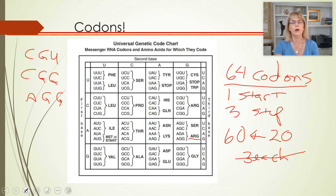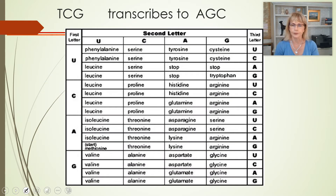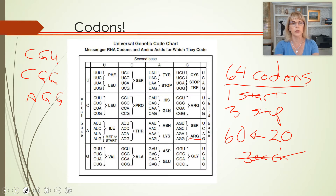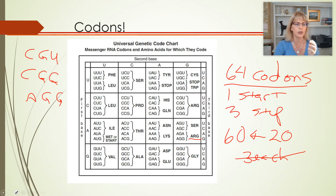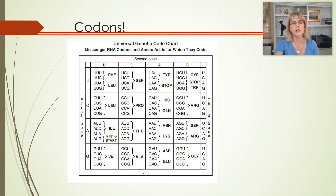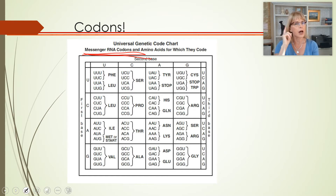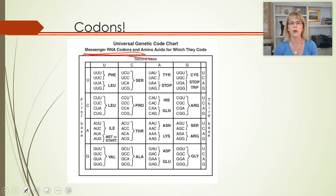On your exam, you're going to have to decode some messages. You'll need to use a genetic code chart like this one. The most important thing to remember is that this is a messenger RNA codon chart — not a DNA codon chart and not an anti-codon chart. This is a messenger RNA codon chart, so you can only decode messenger RNA.